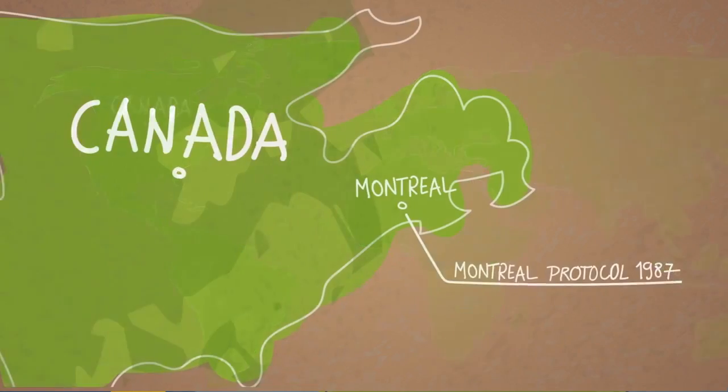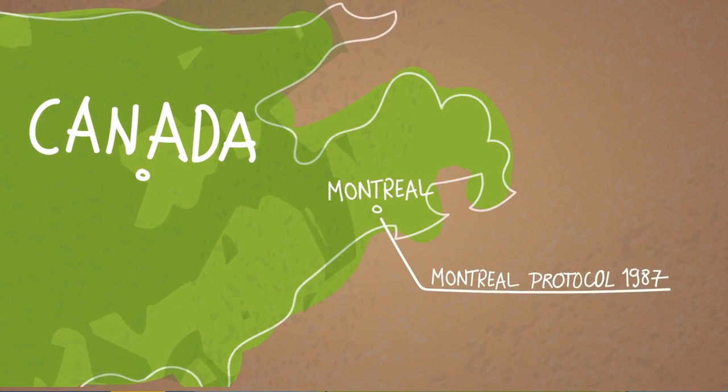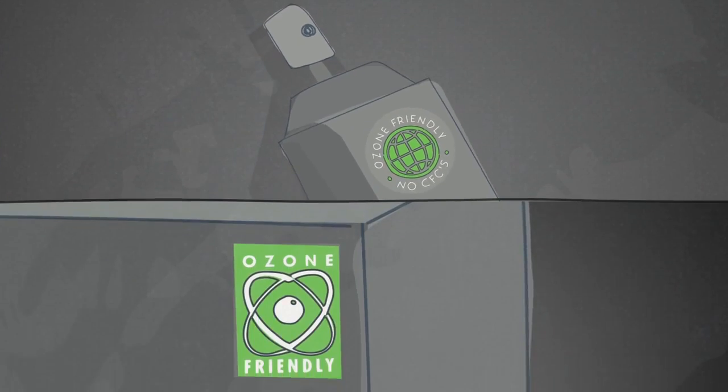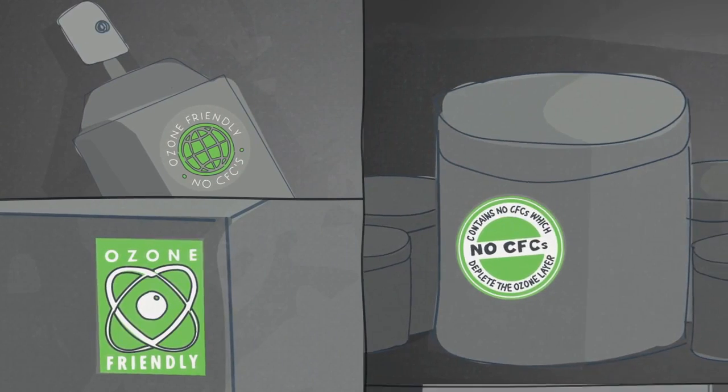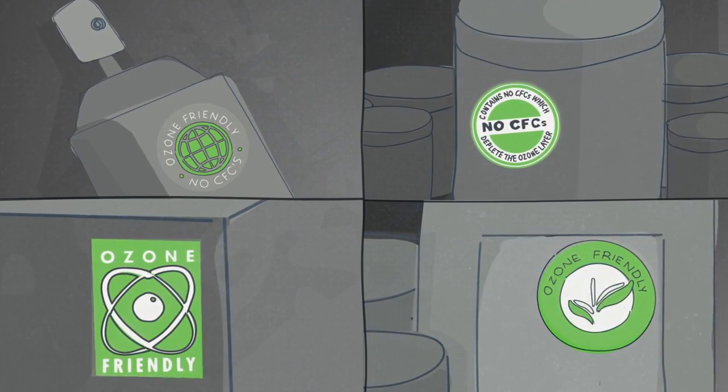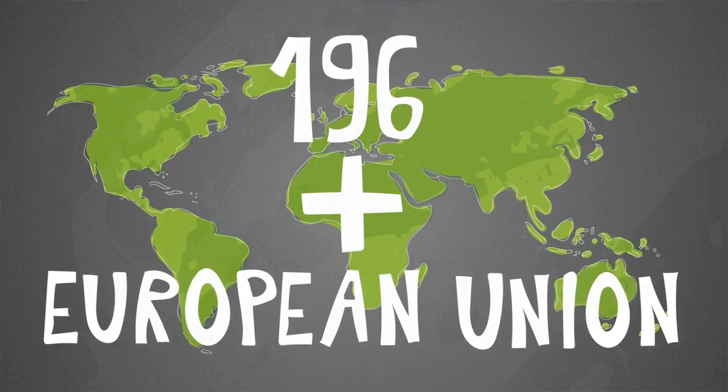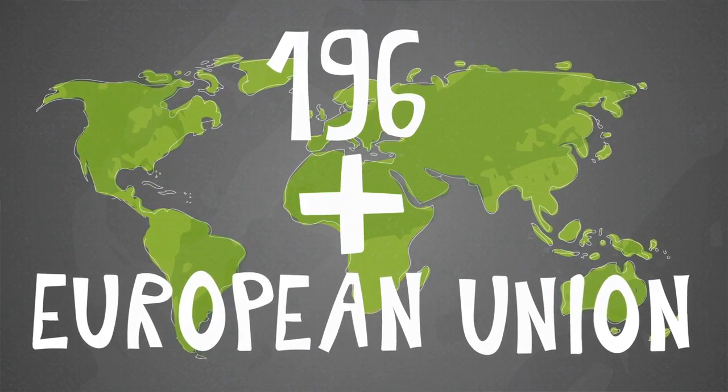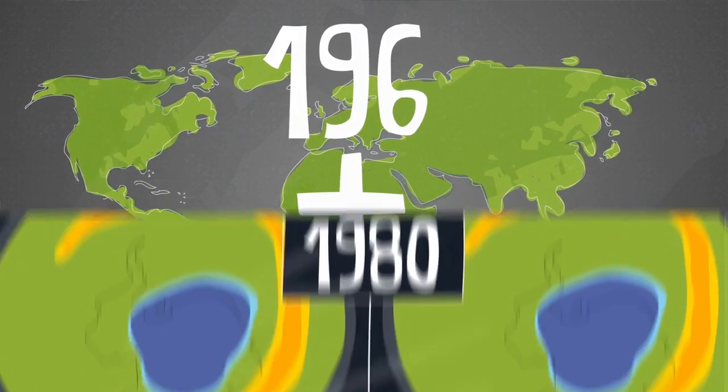The 1987 Montreal Protocol happened. This international treaty agreed to phase out the substances which play a role in ozone depletion and was ratified by 196 states plus the European Union. End result?